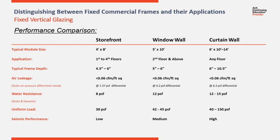Here's a chart comparing the three systems side by side: storefront, window wall, and curtain wall. Typical module size for storefront is about four feet by eight. Window wall grows a little to five by ten, and curtain wall can be considerably larger. Storefront application is typically the first to fourth floor; window wall begins at the second floor and can go higher; curtain wall can be used on any floor. Typical frame depth for storefront is four and a half to six inches, window wall five to six, and curtain wall ranges from six to ten and a half. Looking at air, water, and uniform load performance, window wall is favored toward curtain wall with higher performance testing standards closer to that of a curtain wall.